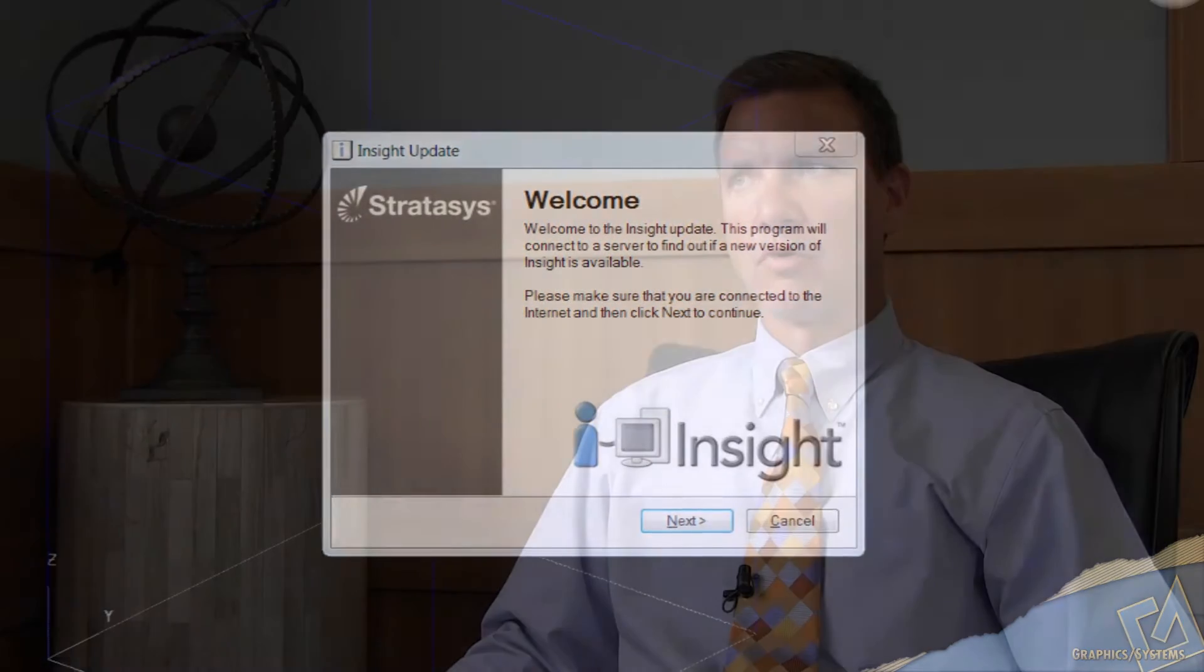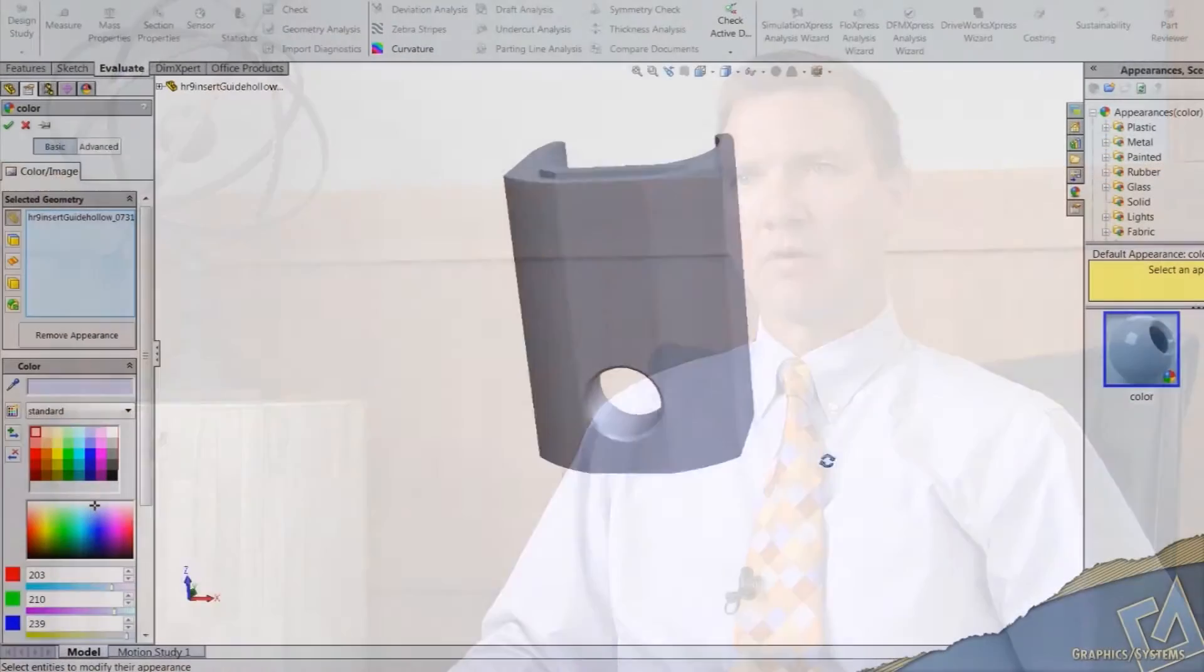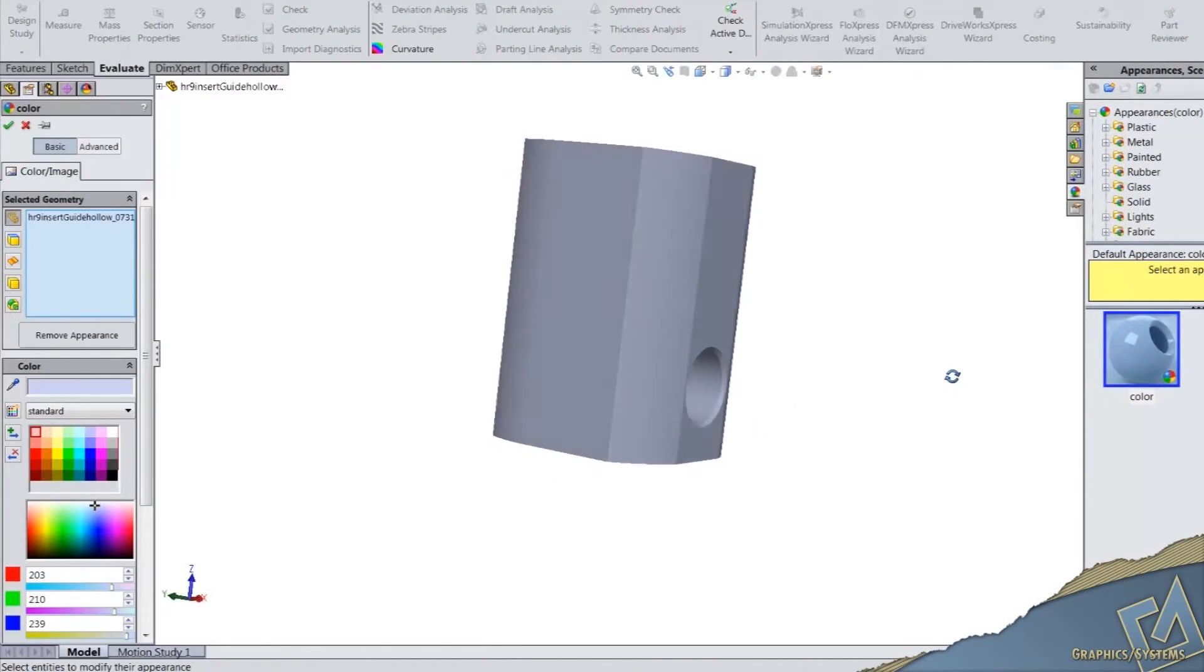The Insight software is very compatible with our SOLIDWORKS system. We make a 3D drawing and we send it directly to the Fortis printing machine.